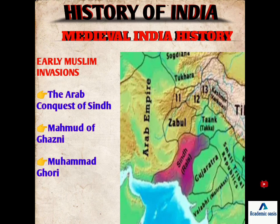Hello guys, how are you all? As you know, we started medieval history and our ancient history has been completed. In medieval history, we have covered many topics and some dynasties that prepared our base. In this video, we will see the Turkish invasion, Muslim invasions such as the Arab conquest of Sindh, then Muhammad Ghori, and how they prepared a base for Delhi and the slave dynasties. I hope you will have a better understanding.